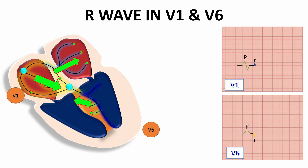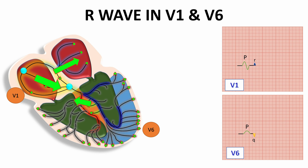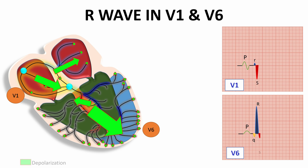After that, the major depolarization of the left ventricle toward the apex of the heart — away from V1 — draws a large negative S wave in V1, and toward V6 draws a large positive R wave in V6. Then the S wave represents the remaining depolarization of the left and right ventricle.